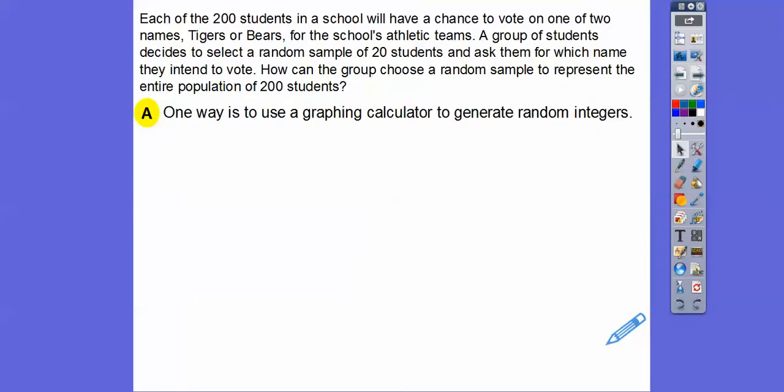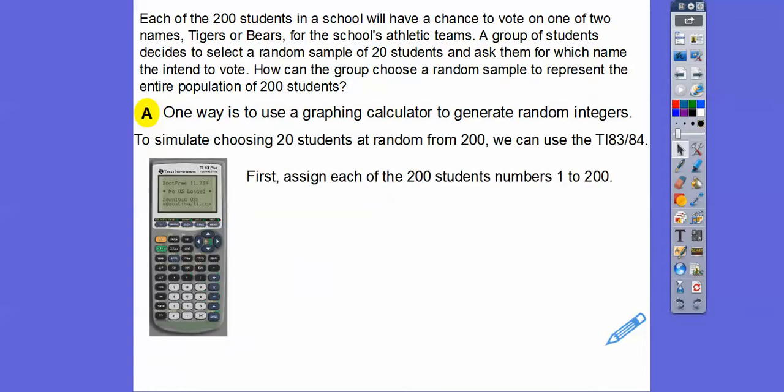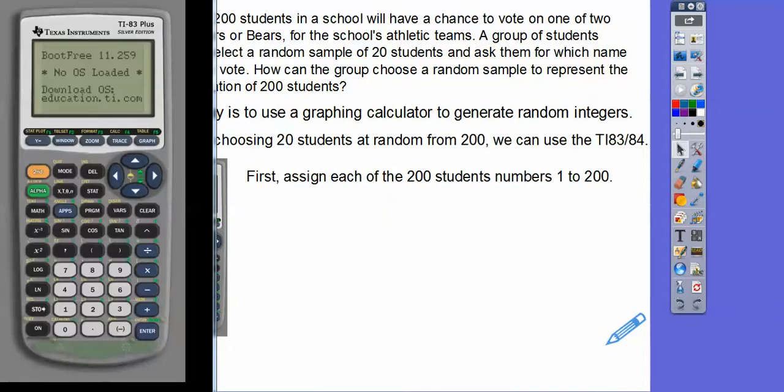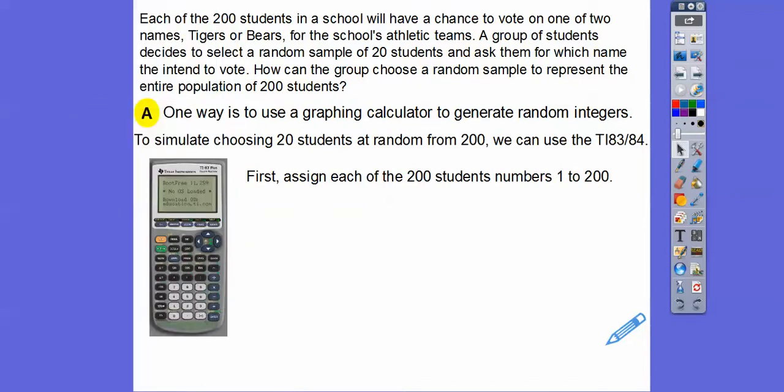One way is we're going to use a graphing calculator. Here's a bigger picture of it right here. We're going to use this TI Texas Instrument 83. The 83s and 84s are identical. The 84s is a little bit better than the 83s, but they both work great. So we're going to simulate choosing 20 students at random from 200 using our TI-83. If you have these in your class, that would be great. If you don't, then just give me a minute. So we're going to first assign each of the 200 students 1 to 200. So each one is assigned a number.